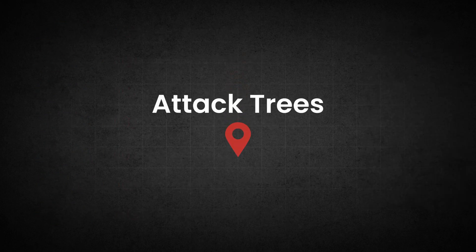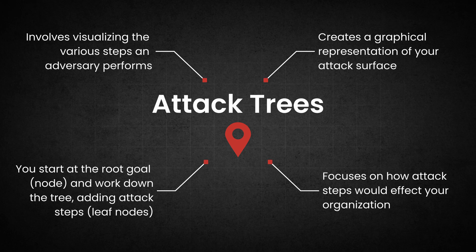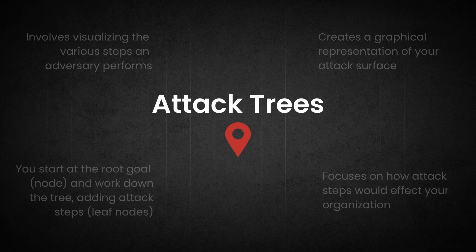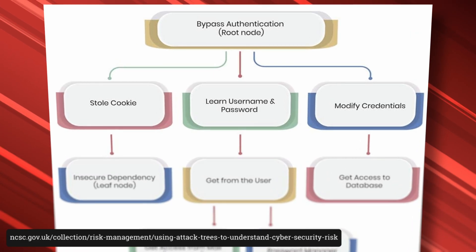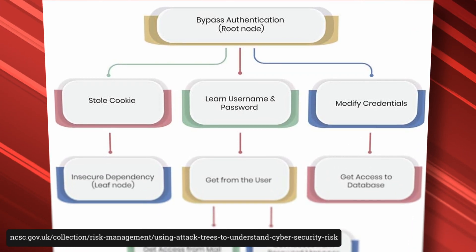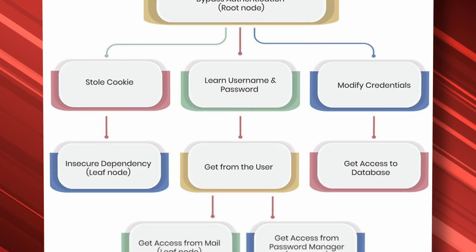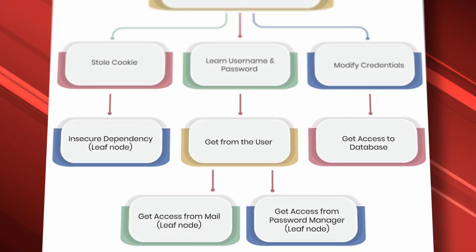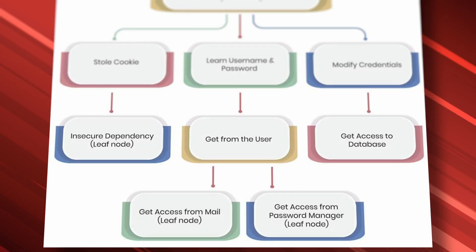Next up, we have Attack Trees. Attack Tree threat modeling involves visualizing the various steps an adversary would take to achieve their goals and the impact this would have. You start at the root goal, or node, and branch into sub-goals and attack steps, or leaf nodes. Visualizing attack scenarios is a great way to demonstrate threats to non-technical stakeholders. It also allows you to highlight points within an attack chain where security controls can be placed to prevent or disrupt an attacker.